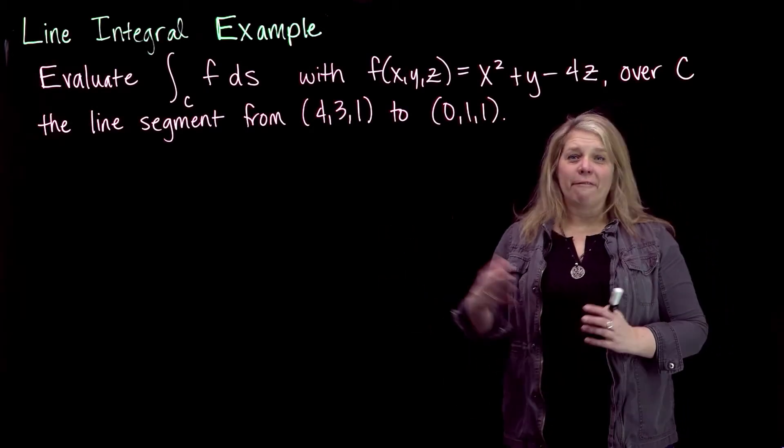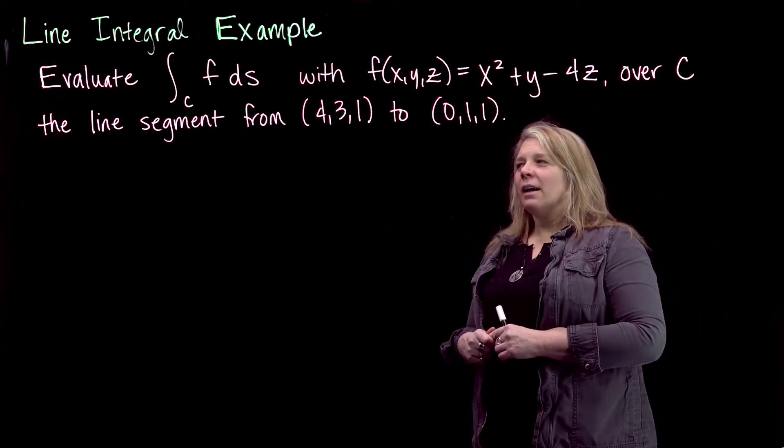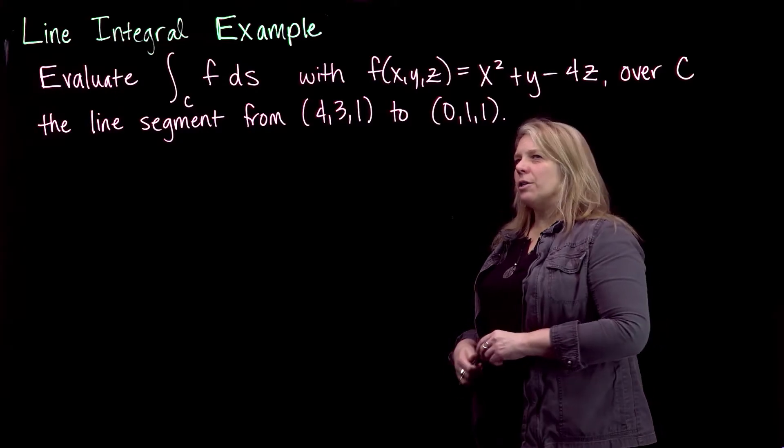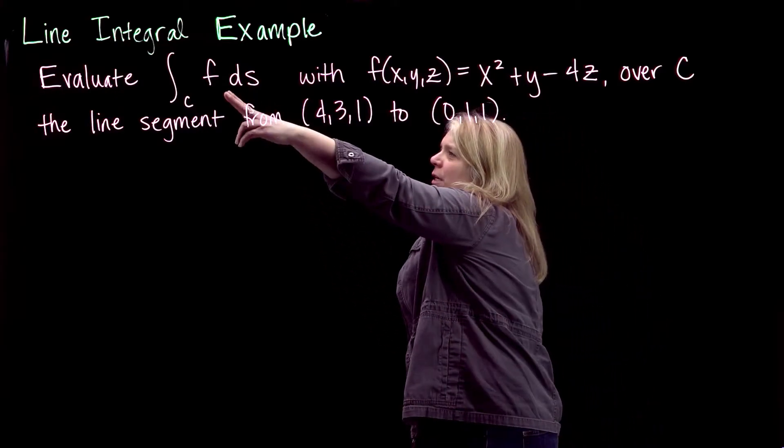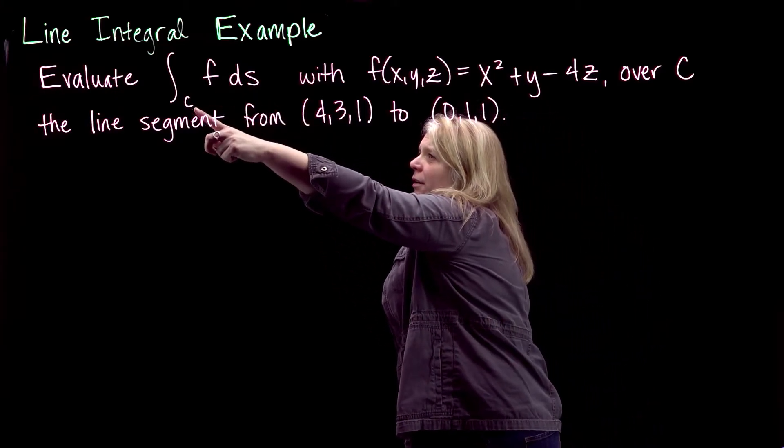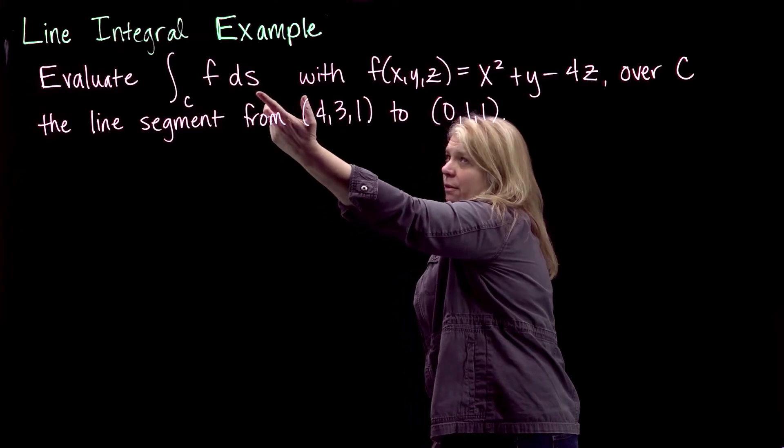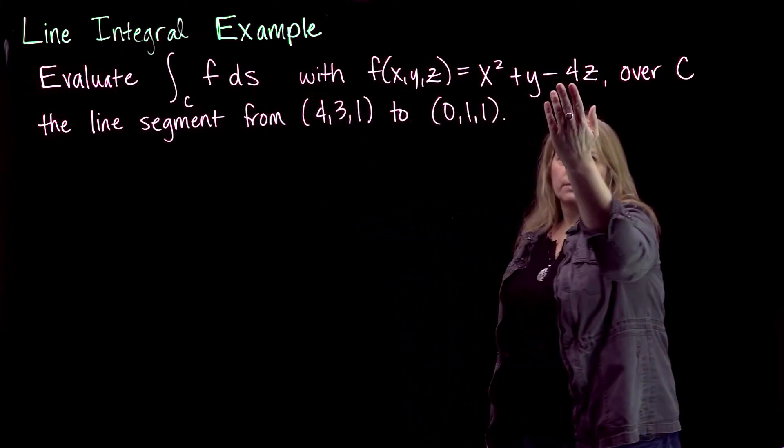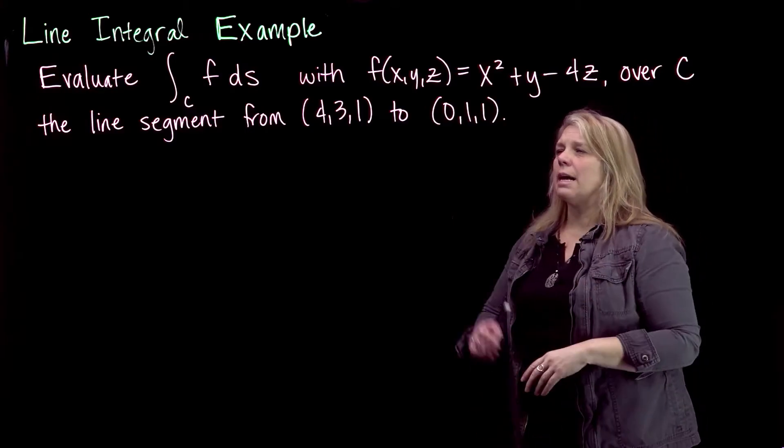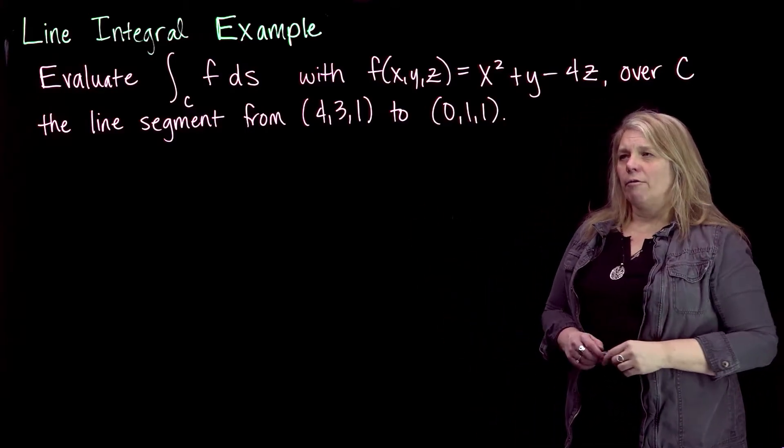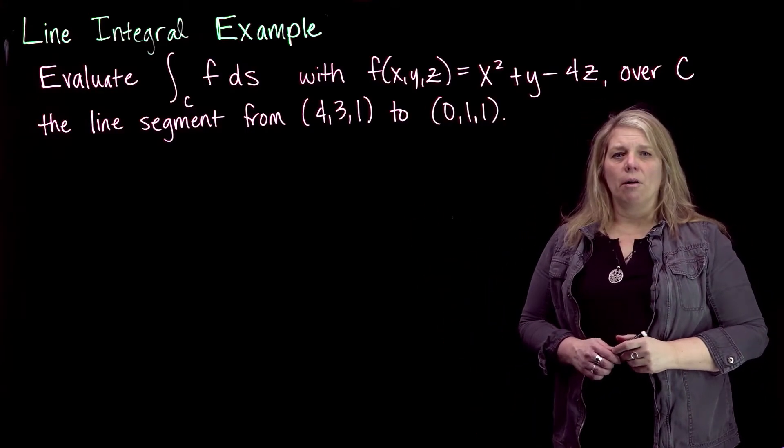Okay, we're going to do our first line integral example here. We are asked to evaluate a function along a curve with the arc length differential with this function, and our curve, in this case, is the line segment from (4,3,1) to (0,1,1).